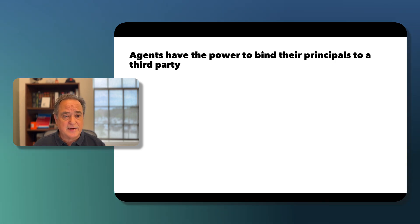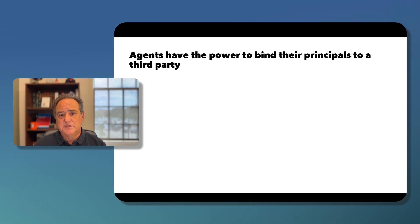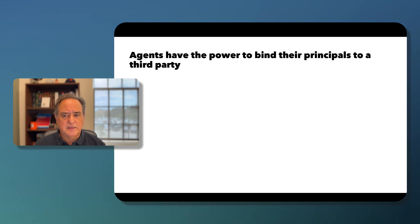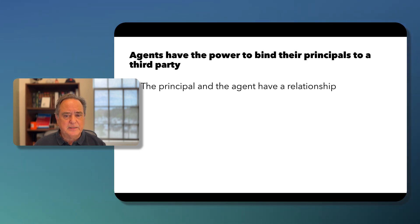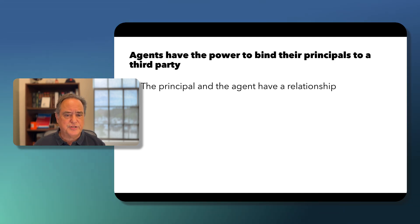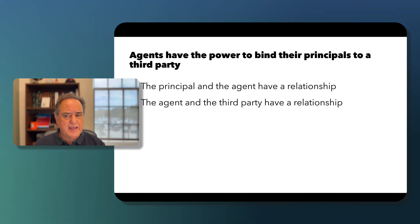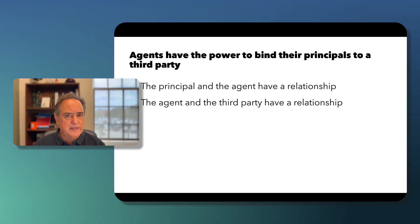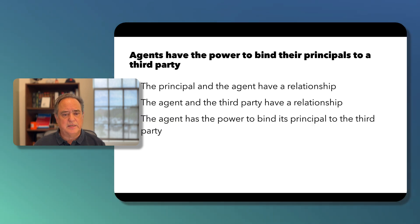Agents have the power to bind their principals to a third party. The principal and agent have a contractual relationship, and the agent and the third party have a relationship. Because of the legal doctrine of agency, the agent has the power to bind its principal to the third party.